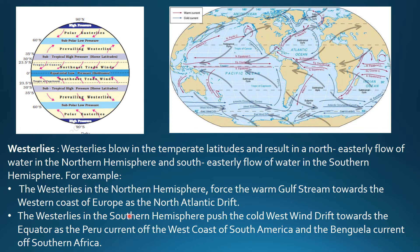Similarly, the westerlies in the Southern Hemisphere push the cold West Wind Drift towards the equator as the Peru Current off the west coast of South America and the Benguela Current of Southern Africa, as you can see on the map.